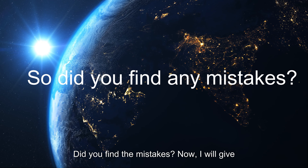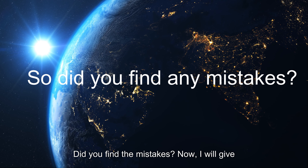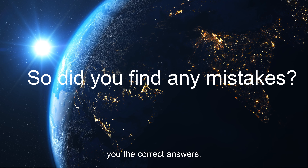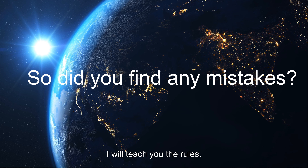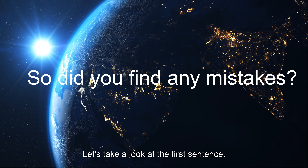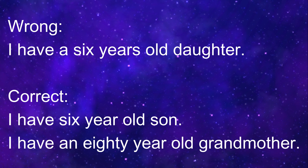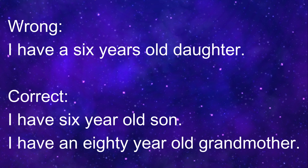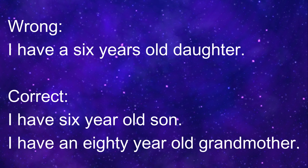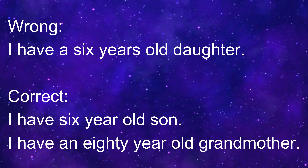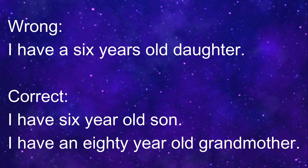Did you find the mistakes? Now I will give you the correct answers. I will teach you the rules. Let's take a look at the first sentence: I have a six years old daughter. Where is the mistake? It should be: I have a six-year-old daughter. Or I have a five-year-old son.